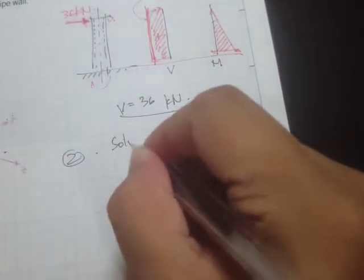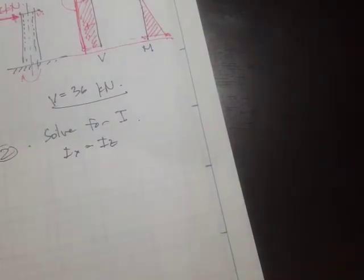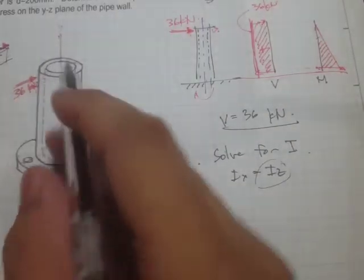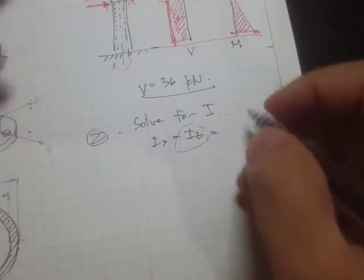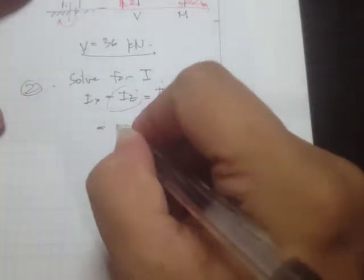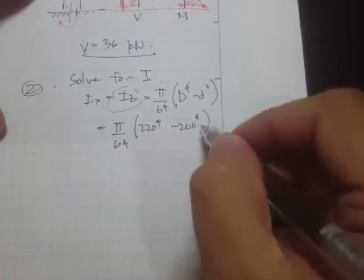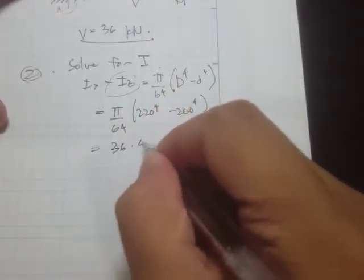The next step is to solve for I — the moment of inertia. Since the cross-section is circular, Ix equals Iz. We want Iz because the bending is along the z-axis. The equation is π/64 × (D⁴ − d⁴). Substituting: π/64 × (220⁴ − 200⁴) = 36.45 × 10⁶ mm⁴.